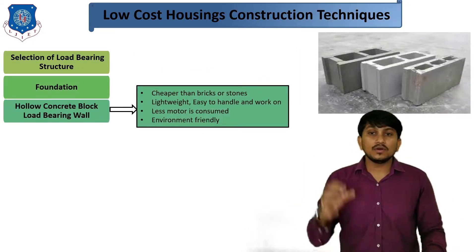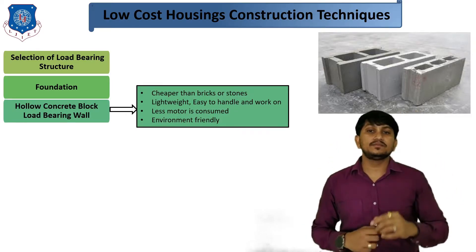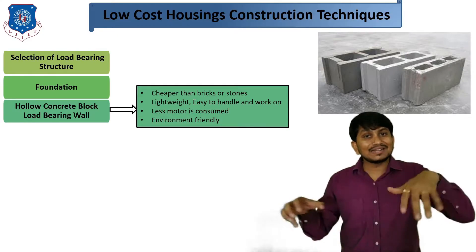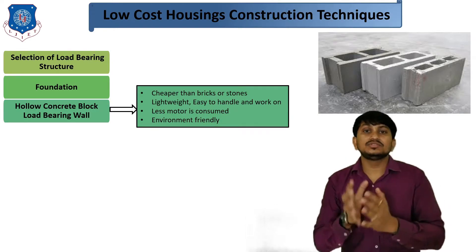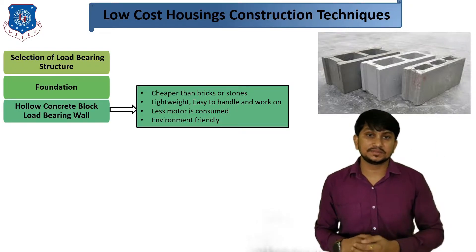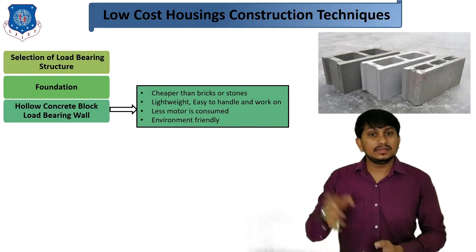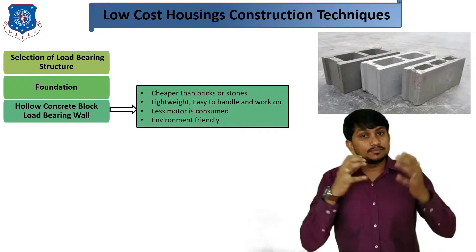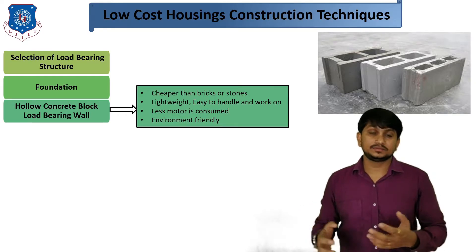Third technique is the use of hollow concrete blocks in load-bearing walls. Because of using hollow concrete blocks, the mortar requirement is less, so you can achieve economy. It is cheaper than bricks or stone, lightweight, easy to handle and work with. Less mortar is consumed and it is also environmentally friendly because it is made of fly ash, which is a recyclable material from power plants.